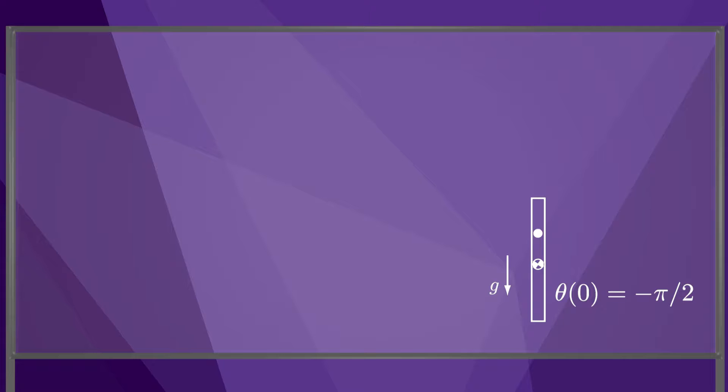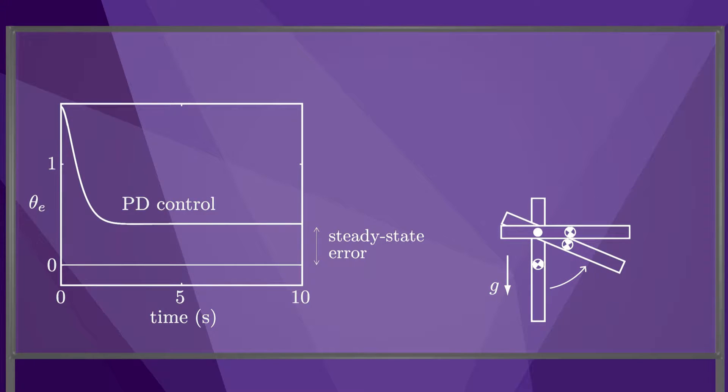For example, imagine the initial resting state of the joint is at minus pi over two. The desired set point is theta d equals zero. The error response looks like this. The joint stops short of the desired angle.